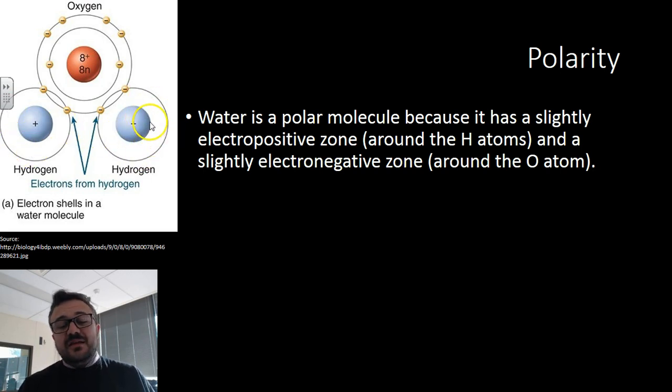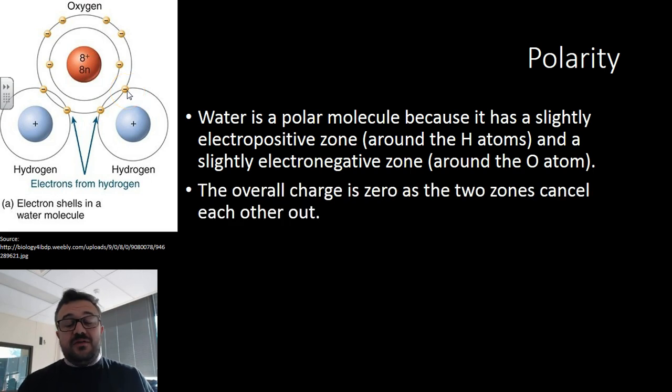So you can see that around the hydrogen, there are two positive zones. There's a positive area there where there's no electrons. There's just a stubby nucleus poking out. And we have an abundance of electrons here around only eight protons. So there's 10 electrons around only eight protons. This has a negative zone. So their overall charge is zero. They all equal out. But the two zones cancel each other out.